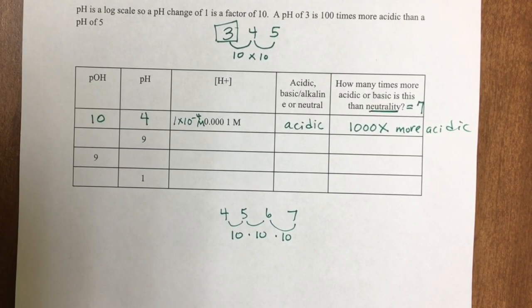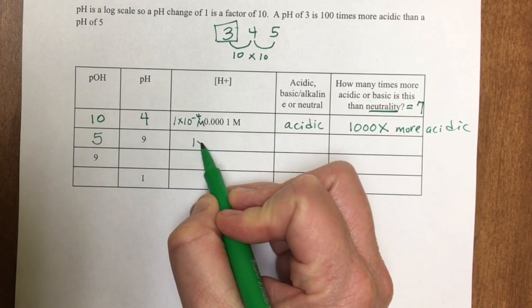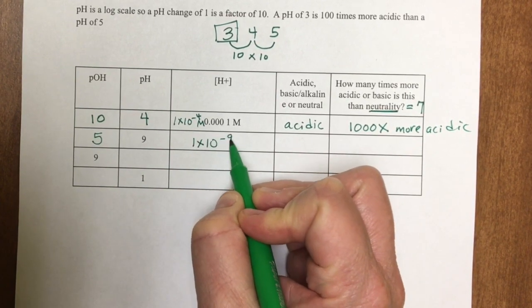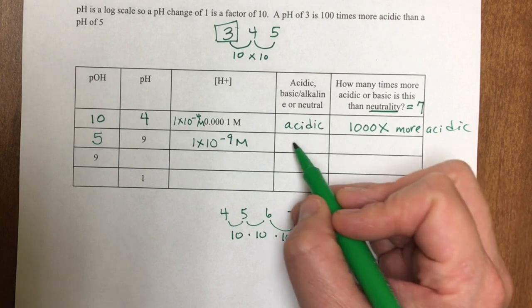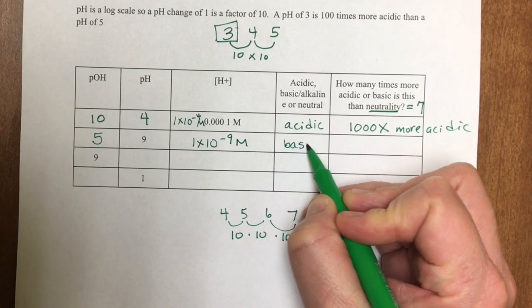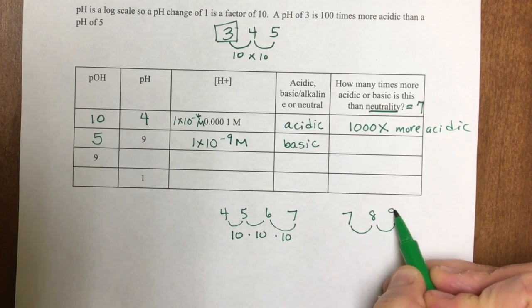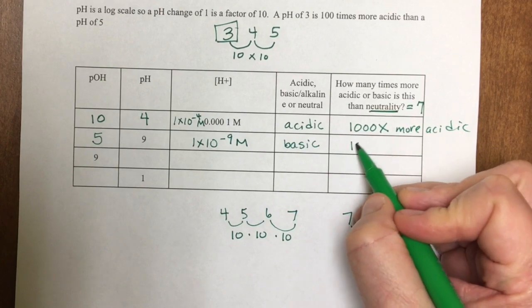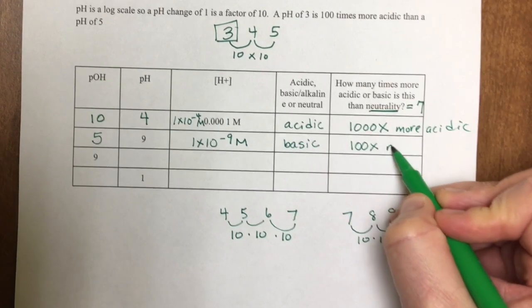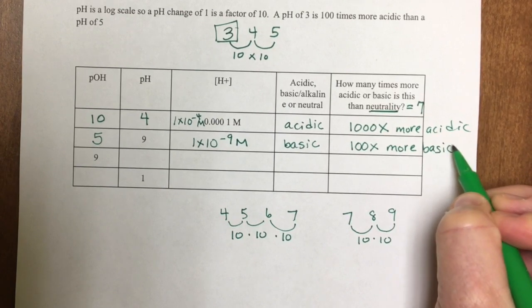The next one is pH of 9, so my pOH is 5. Hydrogen ion concentration is 1 times 10 to the minus 9 molarity. pH of 9 is greater than 7, so this is basic or alkaline. To go from 7 to 8 to 9, that's 10 times 10, which is 100 times more basic than neutrality.